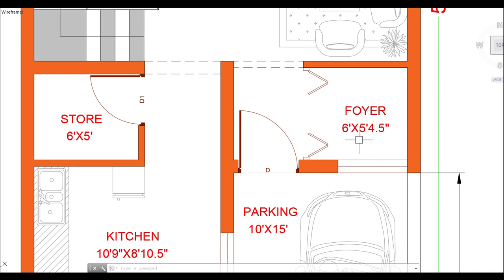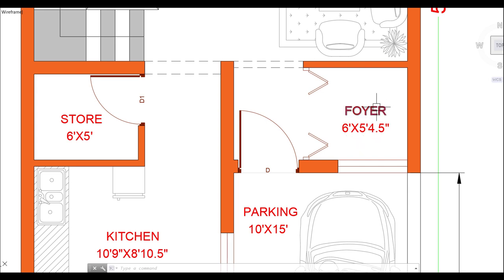The sit-out area was designed per the client's demand to be a room on the outside where you can read the newspaper. You can decorate it with a sliding door. The size of this area is 6 feet by 5 feet 4.5 inches, which is a nice area.